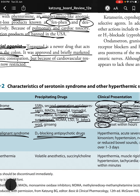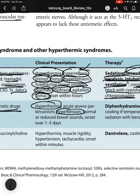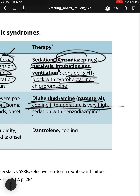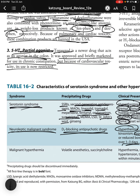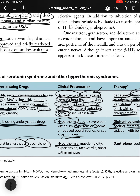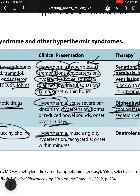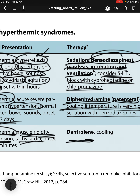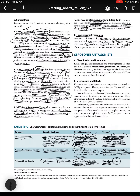Neuroleptic malignant syndrome (NMS) is precipitated by D2-blocking antipsychotic drugs; presentation includes hyperthermia, hypertension, and normal or reduced bowel sounds (opposite to serotonin syndrome), with onset over 1–3 days. Therapy includes diphenhydramine (parenteral), cooling, and benzodiazepine sedation. Malignant hyperthermia is precipitated by volatile anesthetics and succinylcholine; sarcoplasmic calcium is released, causing sustained muscle rigidity, excessive heat, hyperthermia, hypertension, and tachycardia with onset within minutes. Therapy is dantrolene (a skeletal muscle relaxant) and cooling.